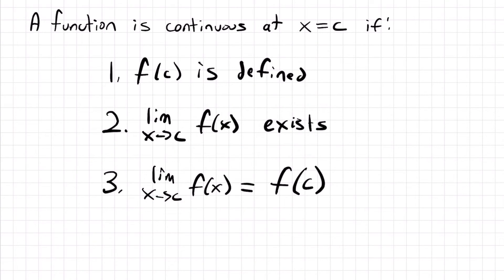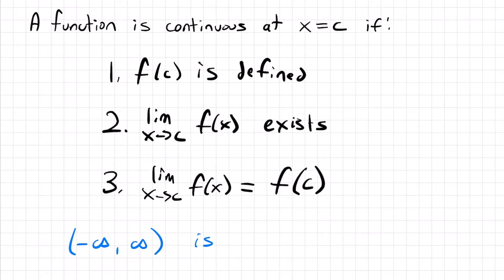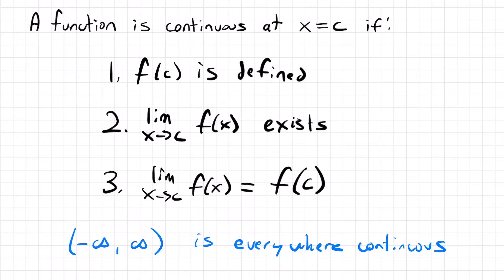As an extra note, if a function is continuous everywhere — meaning every single point is continuous with no breaks, no gaps, no interruptions of any kind — we say that function is everywhere continuous. A function that is continuous everywhere on the real line from negative infinity to infinity is called everywhere continuous. Examples of everywhere continuous functions include x, x squared, x cubed, and many more.